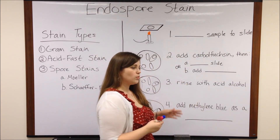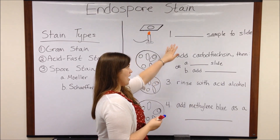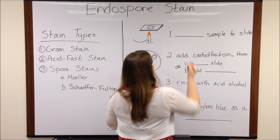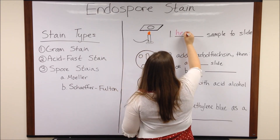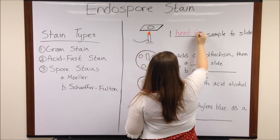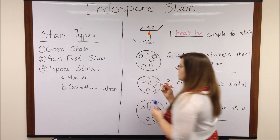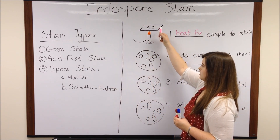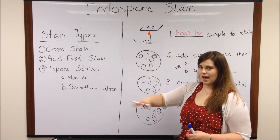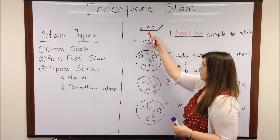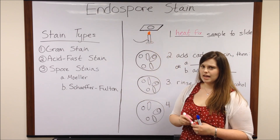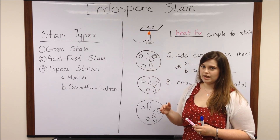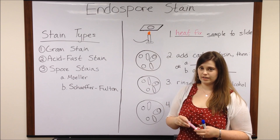Now the spore stains both start the same way with heat fixing a sample to a slide. This is when you have placed the sample on a microscope slide and then you just pass the microscope slide through a Bunsen burner flame. This helps the bacteria in the sample to adhere to the slide so they don't get washed off during later stains.